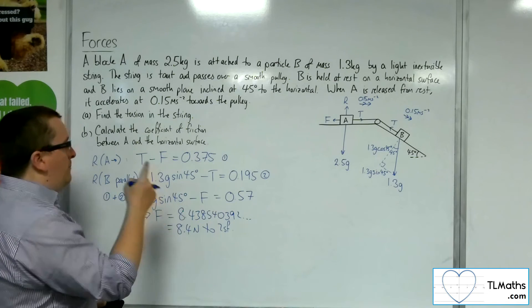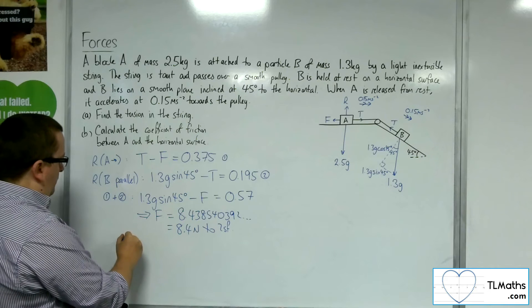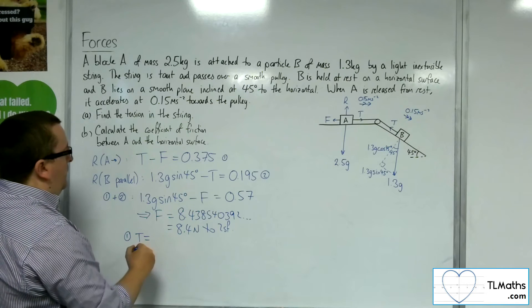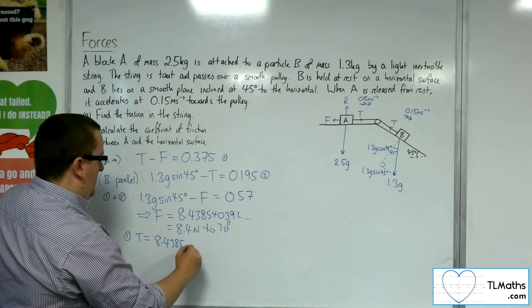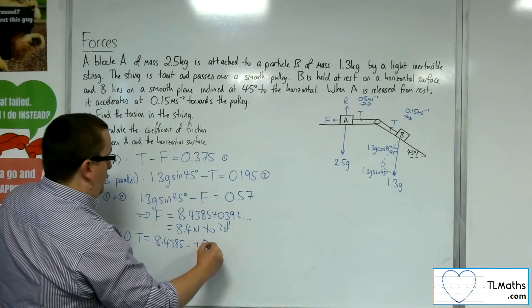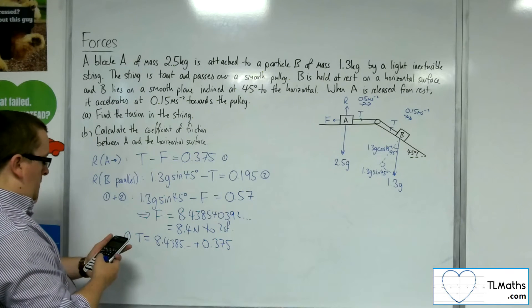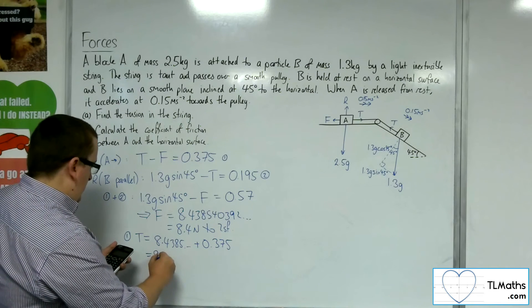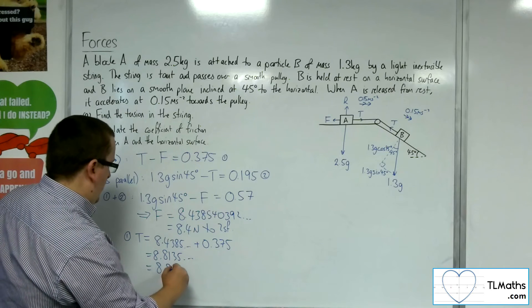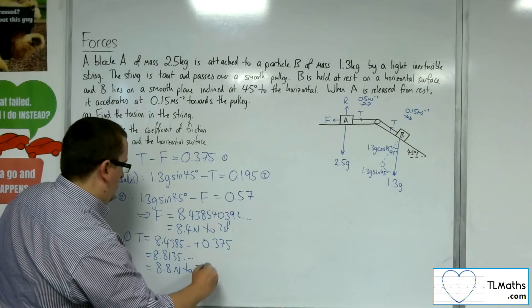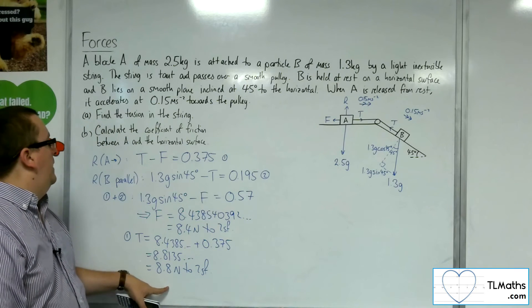So if I substitute that back in to the top equation, the tension is the 8.4385, etc., adding on the 0.375. And so I get 8.8135, so 8.8 newtons to 2 sig fig. So I've now got the tension. That's what I wanted to find for part A.